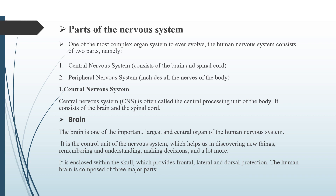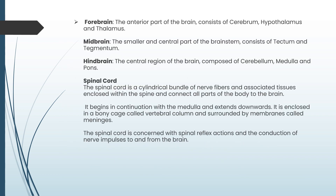The brain is one of the most important, largest and central organs of the human nervous system. It is the control unit of the central nervous system, which helps us in discovering new things, remembering and understanding, making decisions and a lot more. It is enclosed within the skull, which provides frontal, lateral and dorsal protection. The human brain is composed of three major parts. Forebrain: the anterior part of the brain consists of cerebrum, hypothalamus and thalamus.